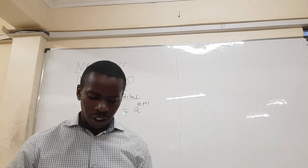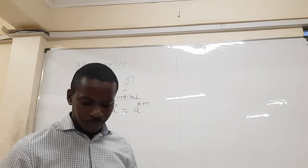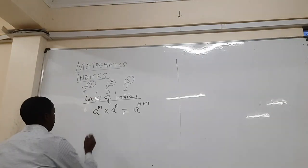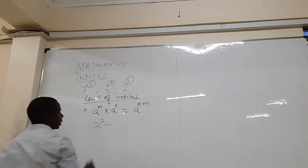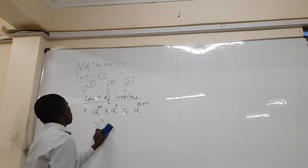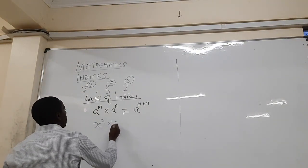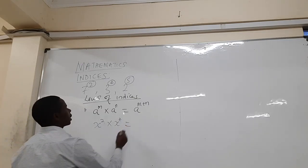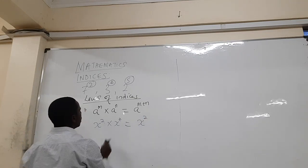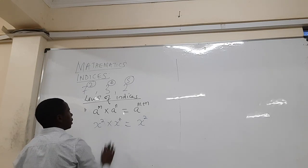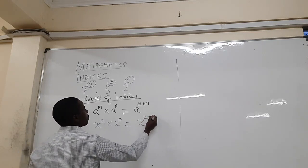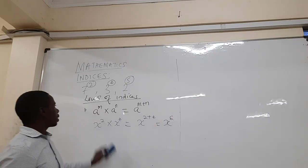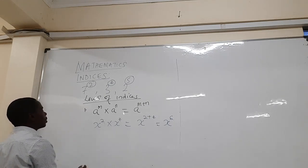Whenever you are multiplying two numbers with the same base, you add the powers or add the indices. That is the first law of indices. To demonstrate this, we have the example x squared times x to the power four. Because the bases are the same — both are x — you add the powers: two plus four, giving you x to the power six.